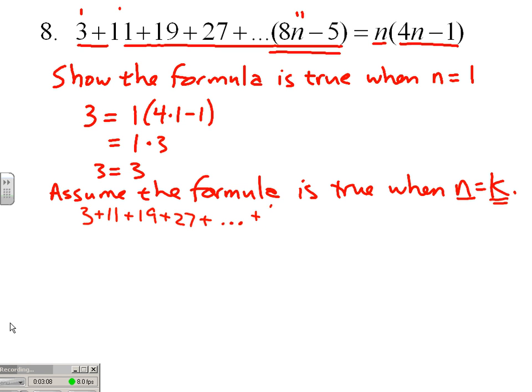If that is true, then this equation is true: 3 plus 11 plus 19 plus 27 plus dot dot dot plus 8k minus 5 equals k times 4k minus 1. You may say, well, that's exactly like our original equation except k is in place of n. Visually you'd be accurate, but mindset wise not so much.